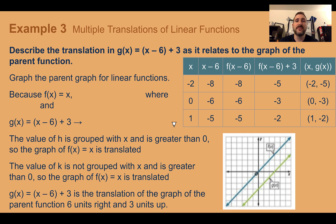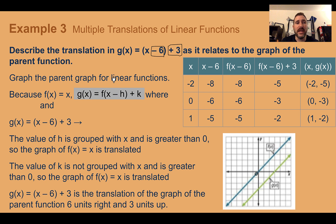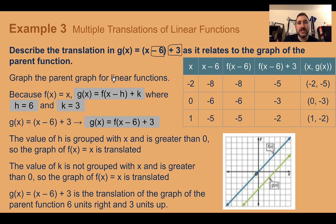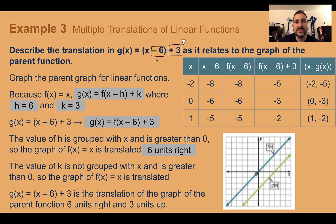Example 3 — multiple translations of linear functions: describe the translation of g(x) = (x − 6) + 3 as it relates to the parent function. There are two things done: minus six is inside (grouped with x) and plus three is at the end. So h equals six and k equals three. The opposite of h means translated six units to the right, and k equals three means three units up. Overall, the graph moved six units to the right and then three units up.